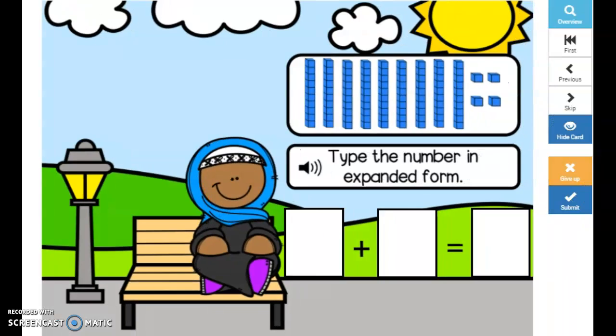And then it will also ask you about the expanded form of numbers. Remember when we expand numbers we take the value of each place value. So first you tell me how many is represented by our tens.